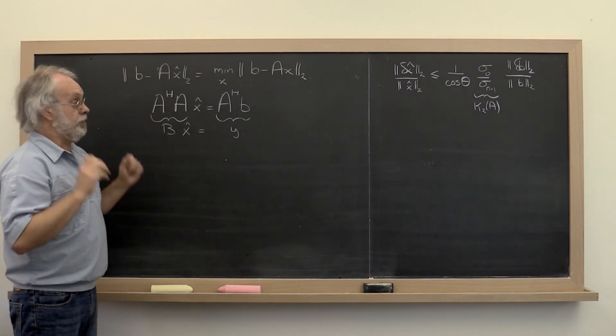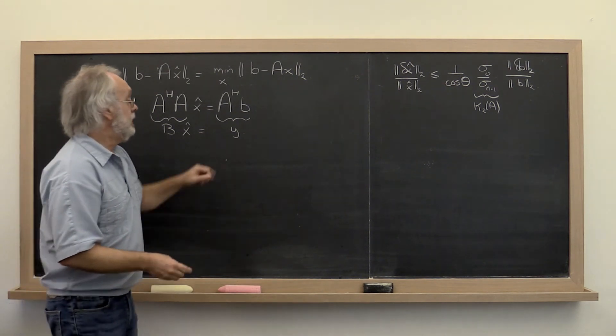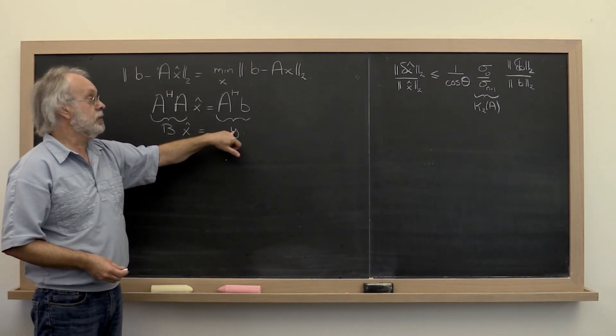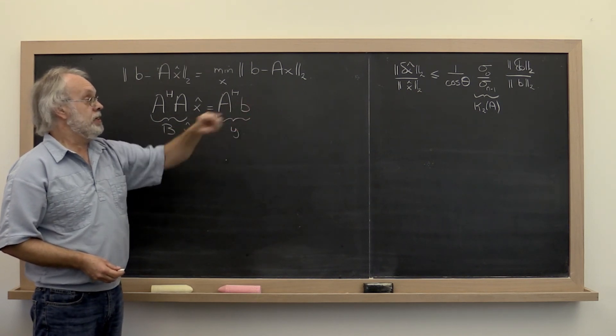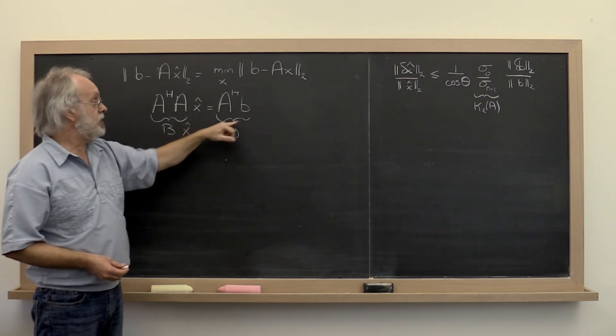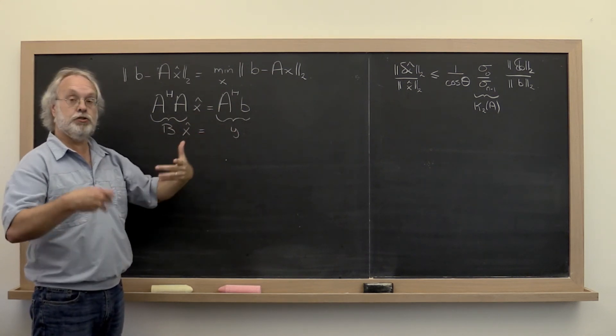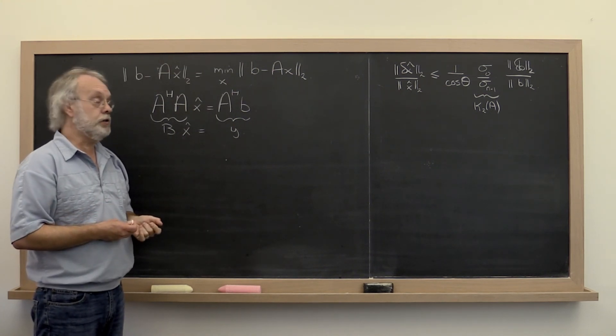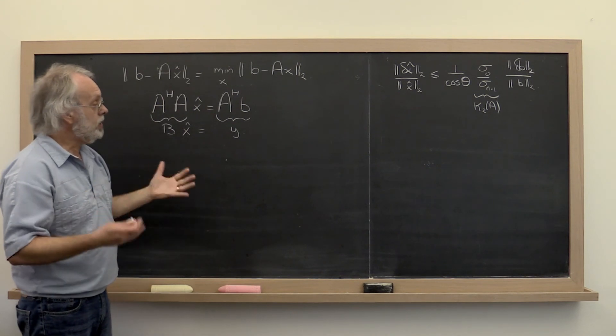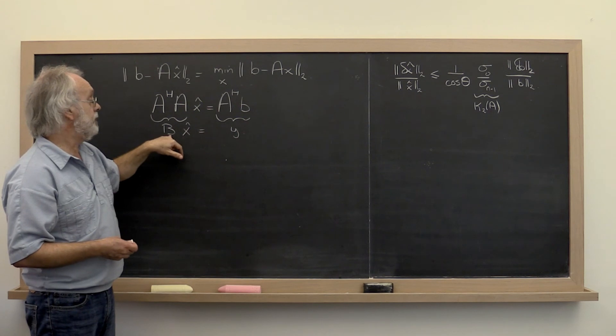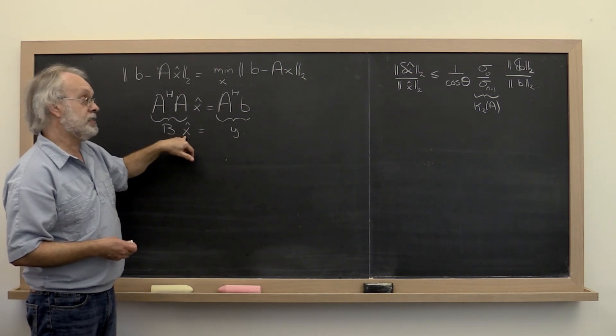Well, except for the fact that there will be error in Y as well. That error will come in part from the fact that there was an error in the right-hand side delta B. And in part because in computing this, you may introduce additional error in the computation because of round-off error.